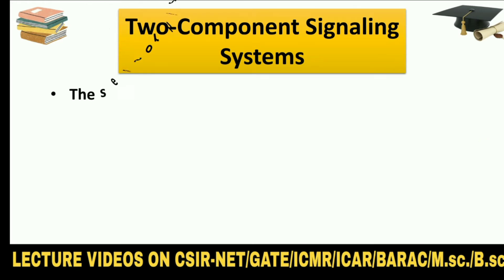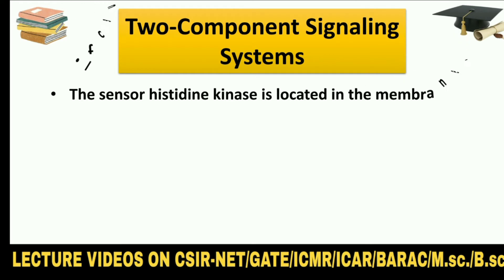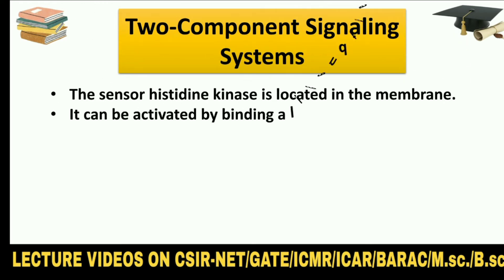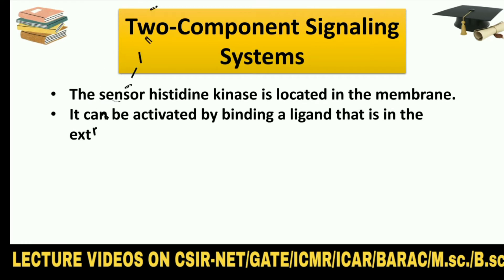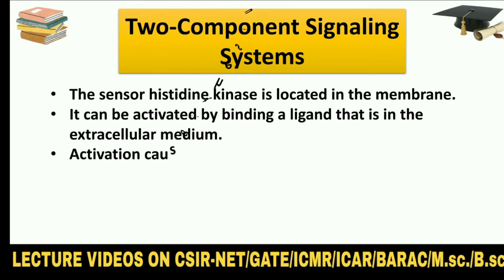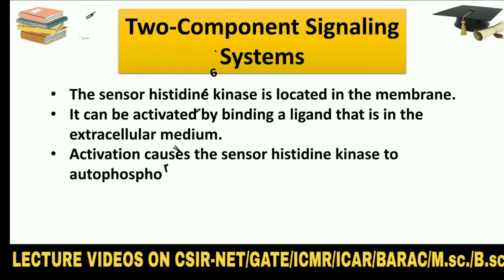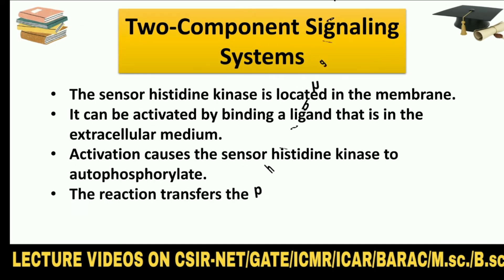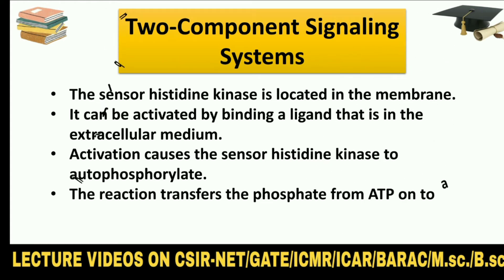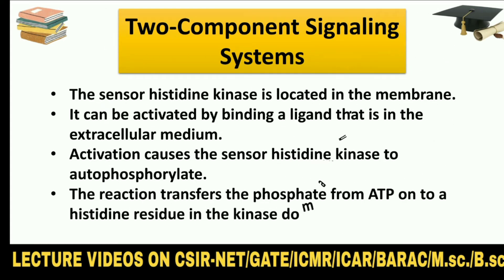The sensor histidine kinase is located in the membrane. It can be activated by binding a ligand in the extracellular medium. Activation causes the sensor histidine kinase to autophosphorylate, transferring the phosphate from ATP onto a histidine residue in the kinase domain.